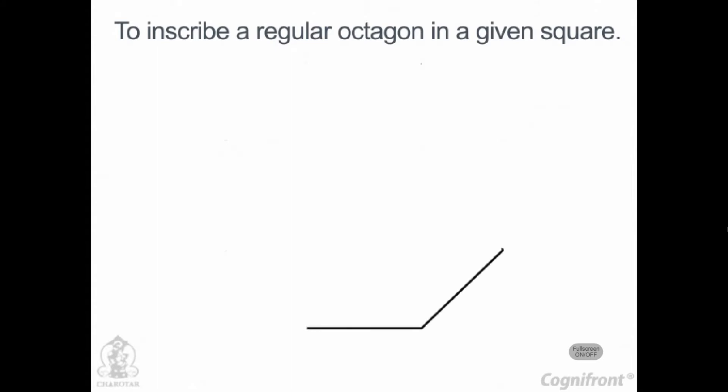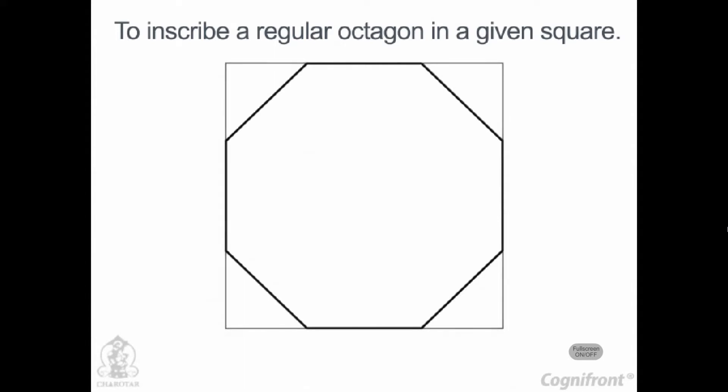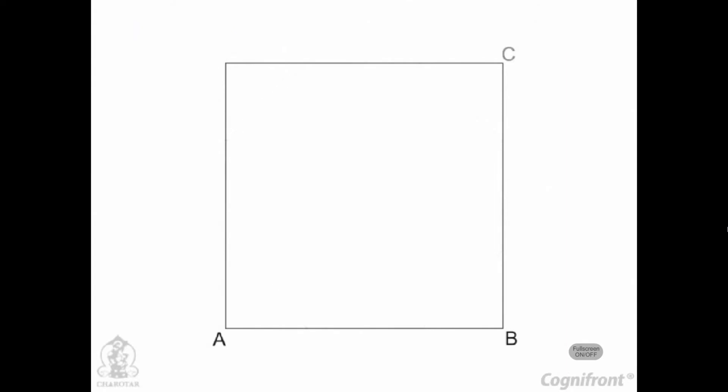Let's study a simple method for constructing a regular octagon. The method involves inscribing a regular octagon in a given square. Consider the given square ABCD.